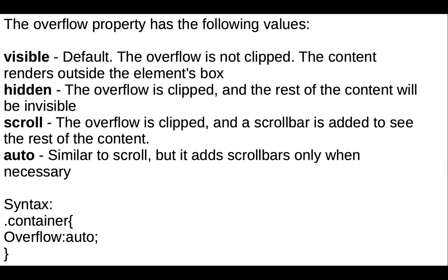Next is 'hidden' — the overflow is clipped and the rest of the content will be invisible. If you add 'scroll', the overflow is clipped and a scrollbar is added to see the rest of the content. Next is 'auto' — similar to scroll but it adds scrollbars only when needed.